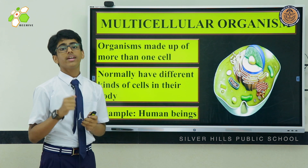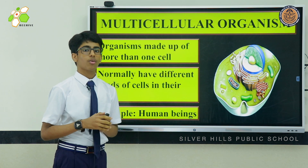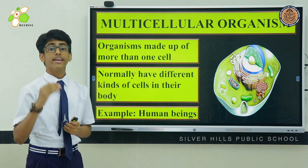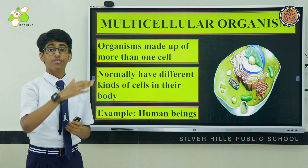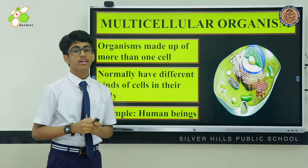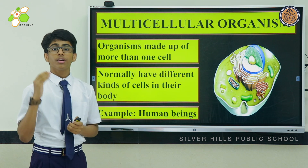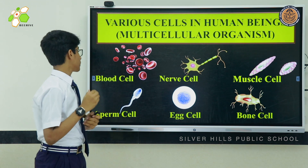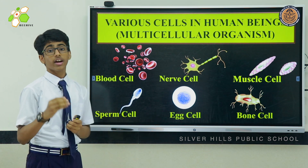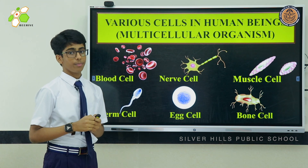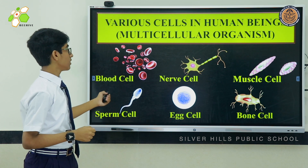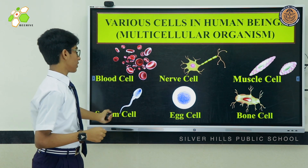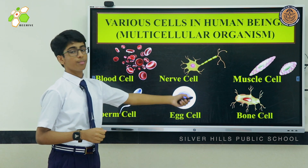Multicellular organisms are made up of more than one cell. They normally have different kinds of cells in their body. An example is human beings. Different kinds of cells present in a human being include blood cell, nerve cell, muscle cell, sperm cell, egg cell, and bone cell.